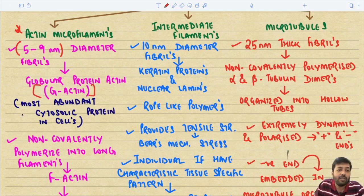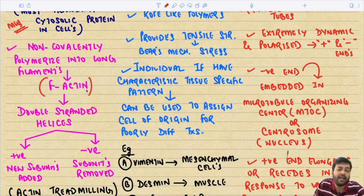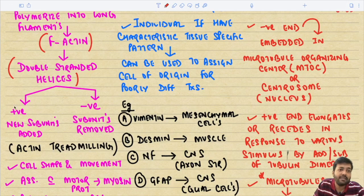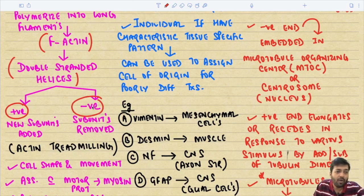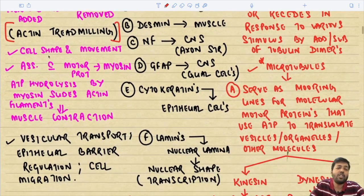G-actin is the most abundant cytosolic protein in cells. These actin monomers non-covalently polymerize with each other to form long filaments called F-actin, which are double-stranded helices with a positive end and a negative end. New subunits are added at the positive end and removed at the negative end — this process is called actin treadmilling.